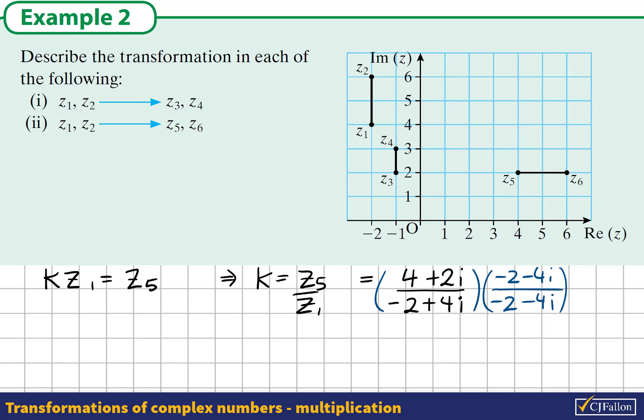So this gives us, along the top line, we're going to multiply 4 by -2, 4 by -4i, 2i by -2, 2i by -4i. Underneath, we have the difference of two squares. So this becomes (-2) squared minus (-4i) squared.